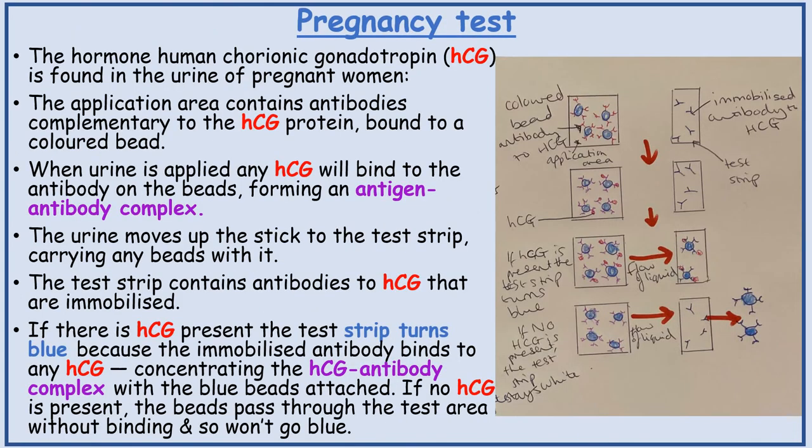Pregnancy tests. The hormone human chorionic gonadotropin, or HCG, is found in the urine of pregnant women. The application area contains antibodies complementary to the HCG protein bound to a coloured bead. When urine is applied, any HCG will bind to the antibody on the beads, forming an antigen-antibody complex. The urine moves up the stick to the test strip, carrying any beads with it.